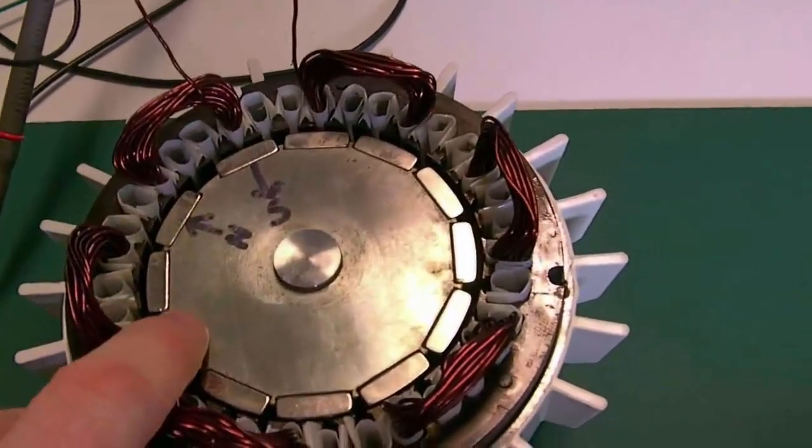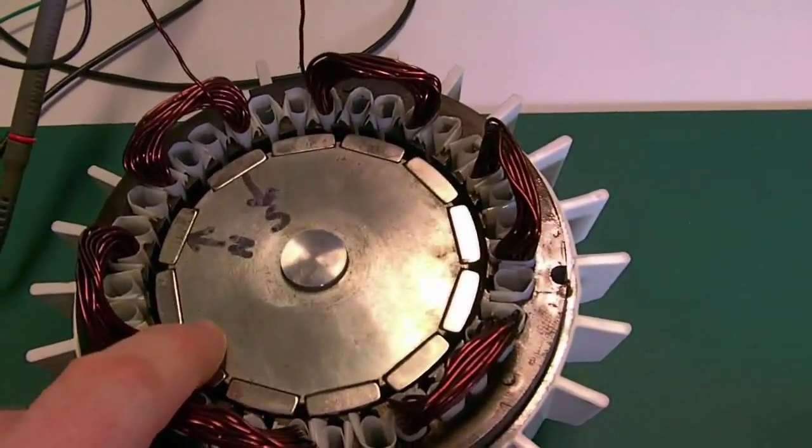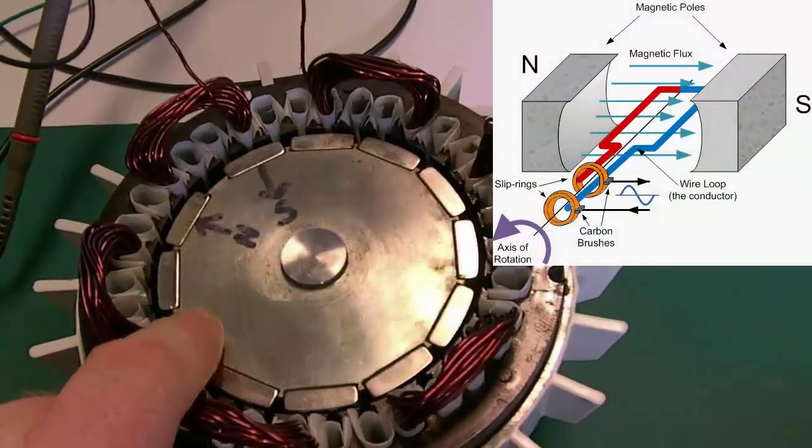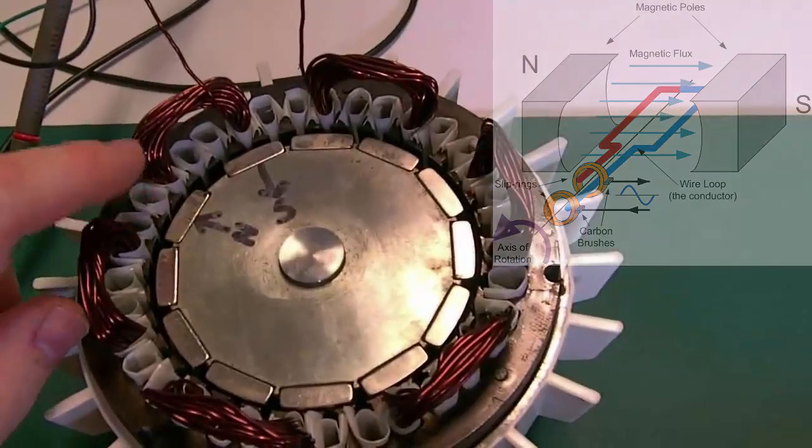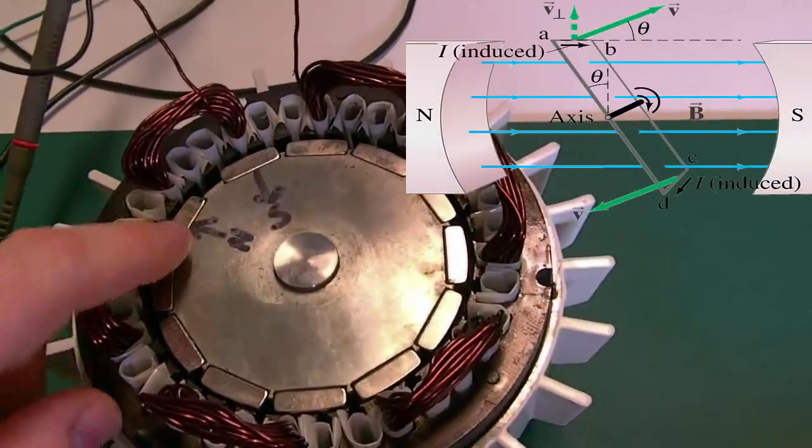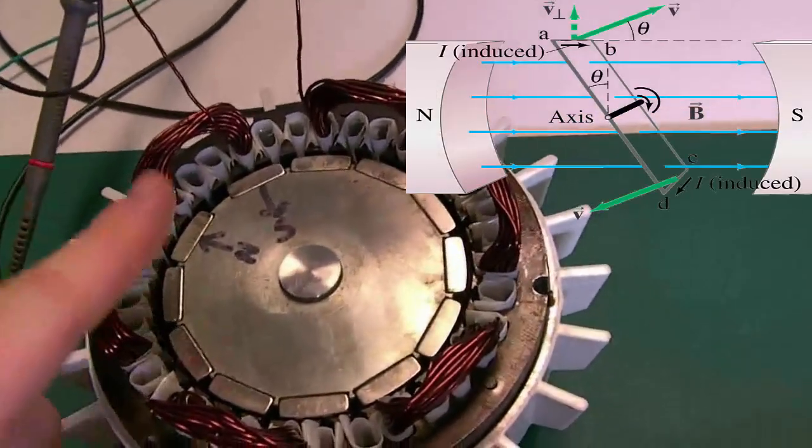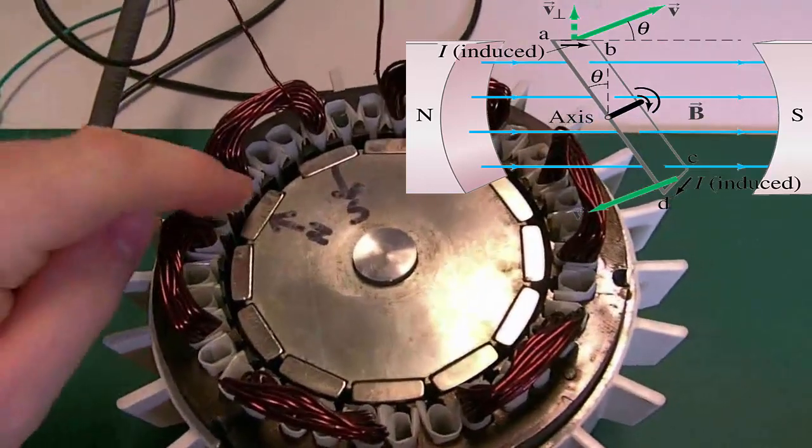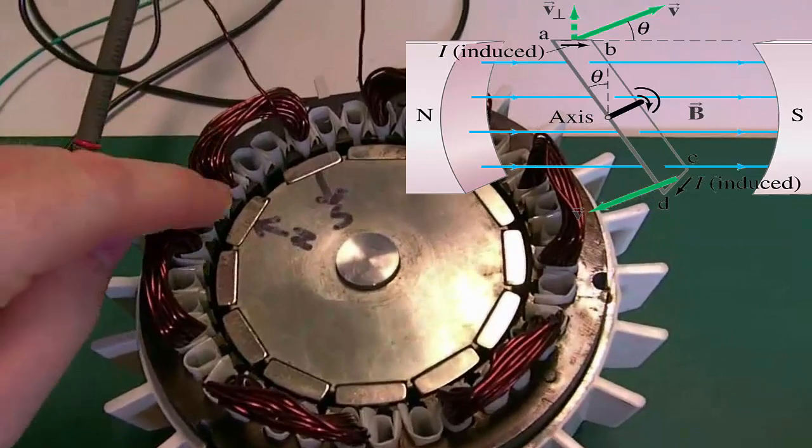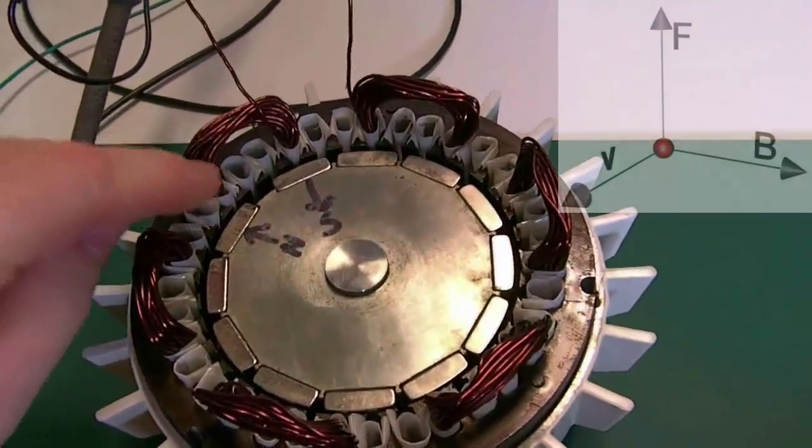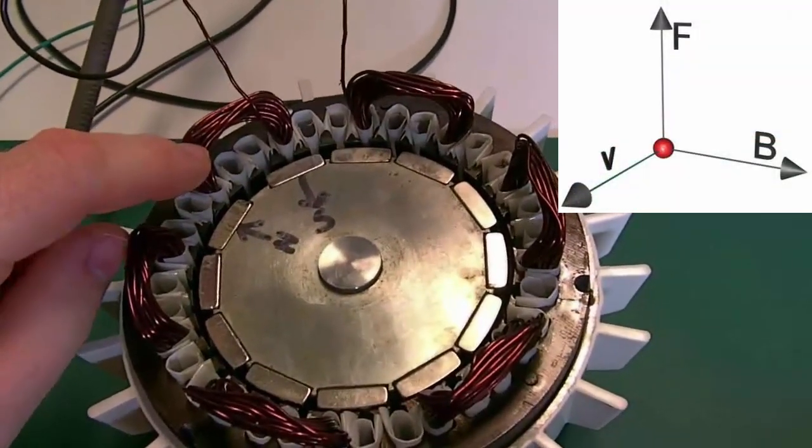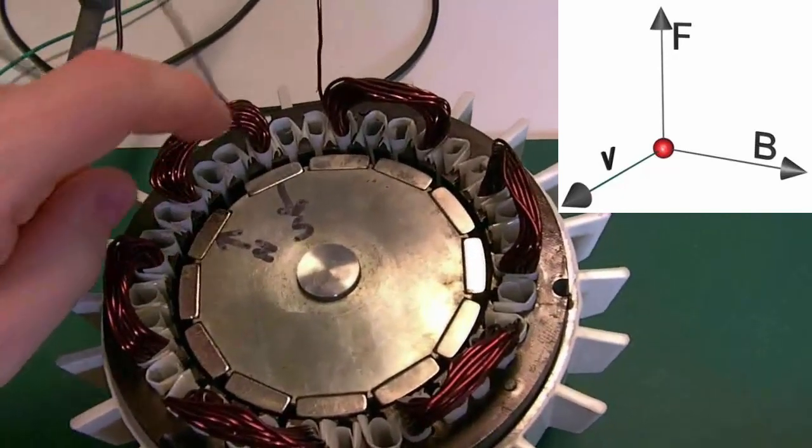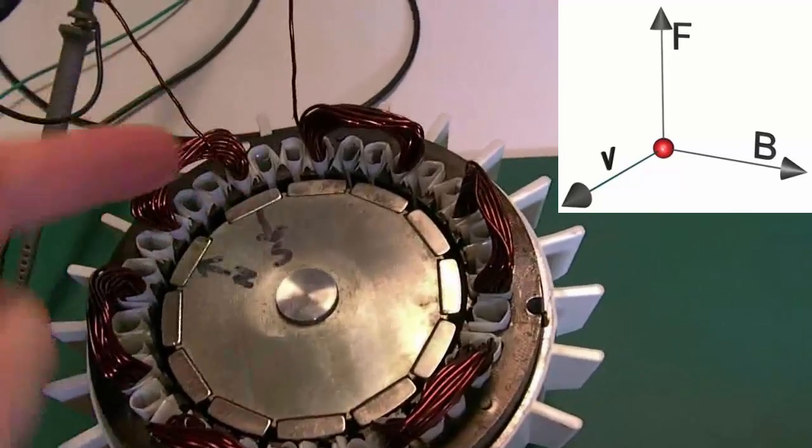The north pointing out this way, south coming back in that way. As the magnets move with velocity V past the coil like that, the EMF is generated. You can see via the Lorentz force, if the north pole is facing out that way and moving that way, then the charge in the wire will be forced—so E is the electron, the charge in the wire—will be forced up this way.